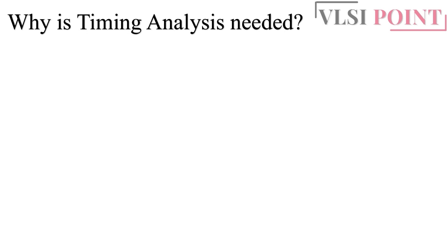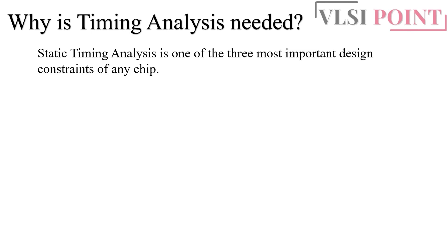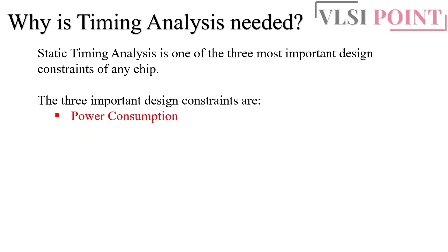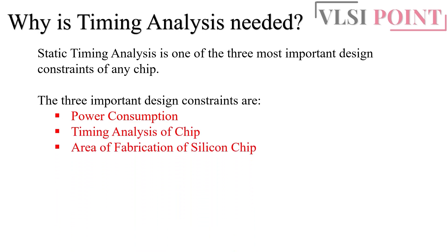Why is timing analysis important? Can we design a circuit without it? STA is one of the three most important design constraints of any chip. These three constraints are: first, power consumption; second, timing analysis of the chip; and third, area of fabrication. Whatever circuit you are designing, there is a trade-off between area, power, and timing — you cannot optimize all three things at the same time.